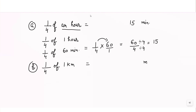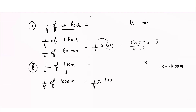Similarly, 1/4 of 1 kilometer equals how many meters? We convert 1 kilometer into the smaller unit — 1 kilometer = 1000 meters. So we write 1/4 into 1000/1, which gives 1000/4. Simplifying by 4, we get 250 meters. In the same way, you can calculate half of an hour, half of 1 kilometer, half of a day, or 1/4 of a day using this method.